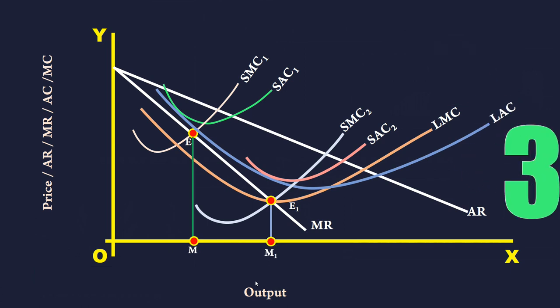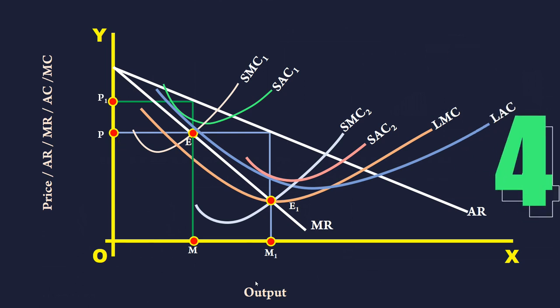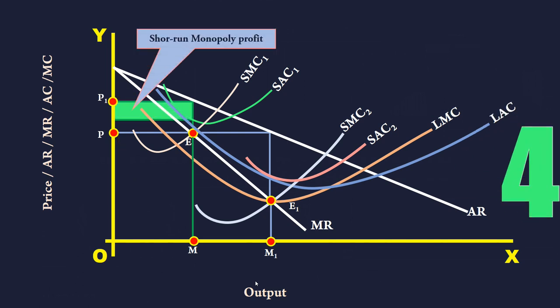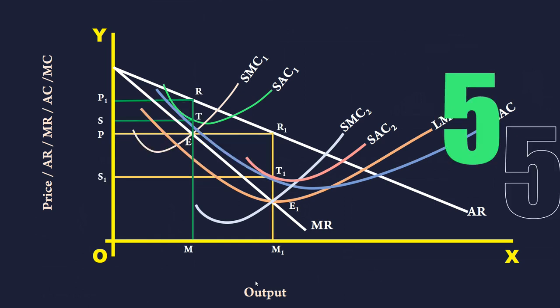3. Short-run monopoly profit is smaller. 4. Short-run monopoly profit is small. Long-run monopoly profit is greater than short-run monopoly profit.